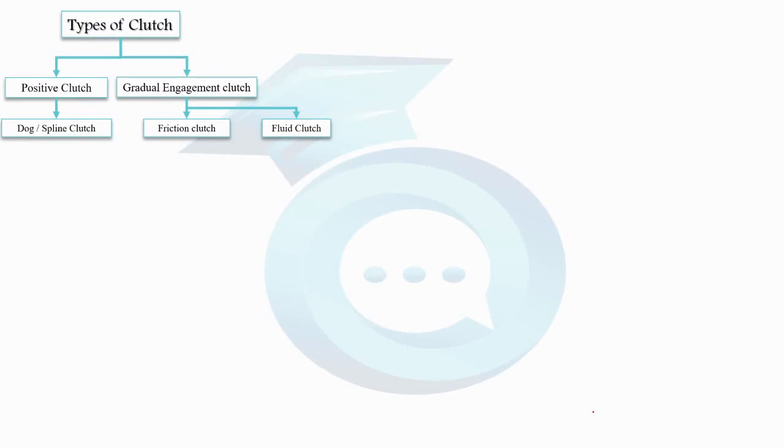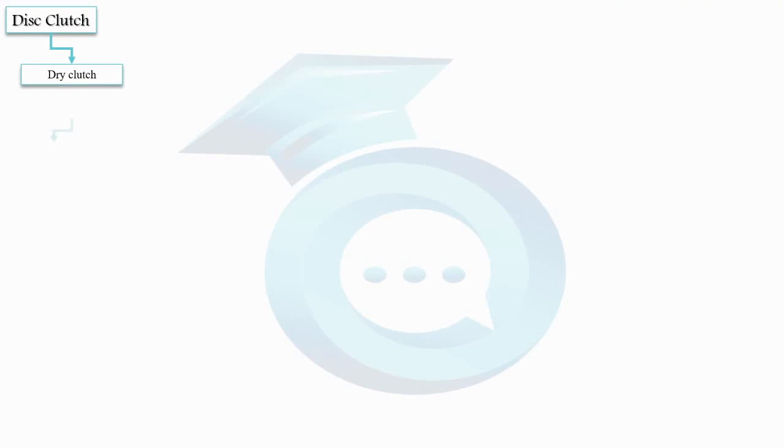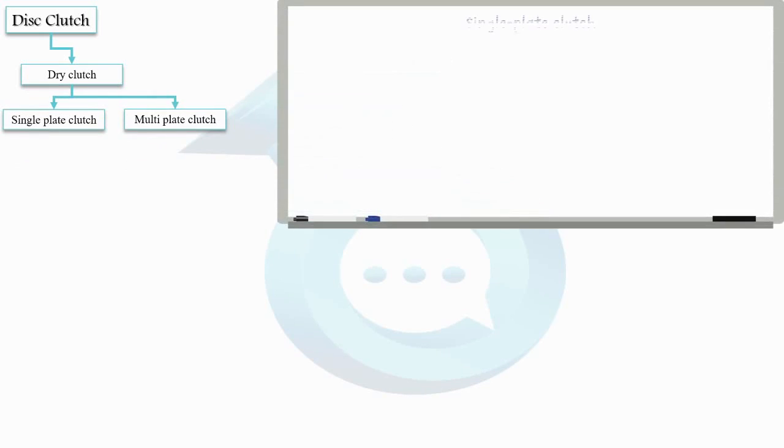Now, moving on, let's focus on the different types of friction clutches. Let's begin with the first type, the disc clutch. This type of clutch can be further divided into two subcategories: the single plate clutch and the multi-plate clutch.